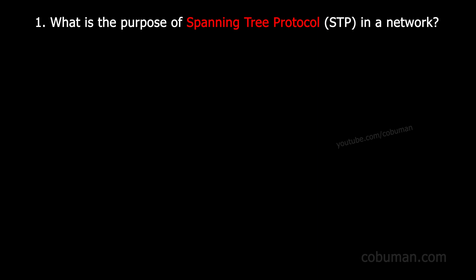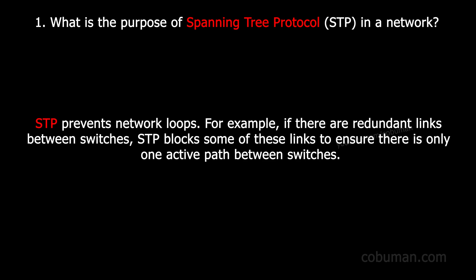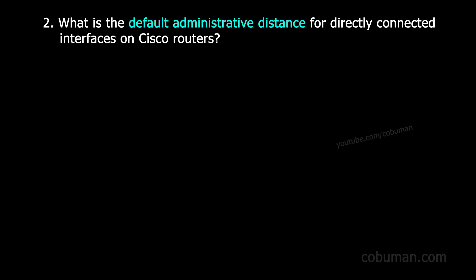Question number one: what is the purpose of Spanning Tree Protocol in a network? STP prevents network loops. For example, if there are redundant links between switches, STP blocks some of those links to ensure there is only one active path between switch interfaces.